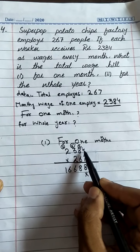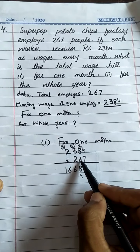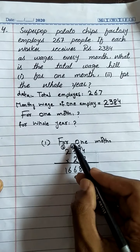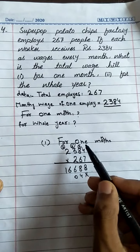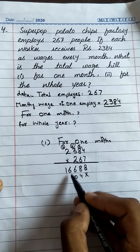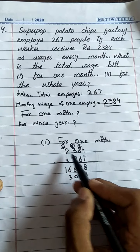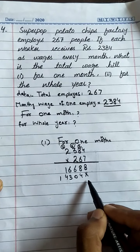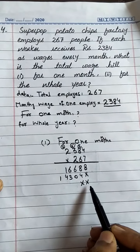Now put two crosses and multiply with the third digit 2: 2 × 4 = 8. 2 × 8 = 16, write 6 carry 1. 2 × 3 = 6, add 1 = 7. 2 × 2 = 4.